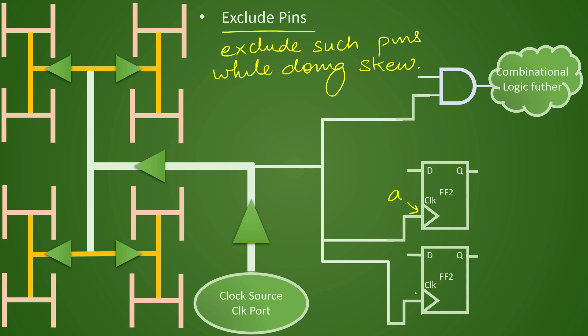And how do we do that? So let us take an example that this is pin A and this is pin B. Between these two pins the tool will be balancing the skew. Let us say that there is a third pin which is also going on and we want to exclude it from the analysis.